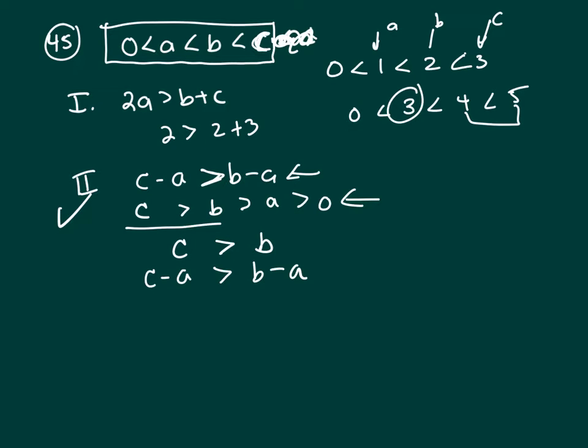And Roman numeral III says c over a is less than b over a. And that's not true because if you've got fractions that have the same denominator, we know that c is larger than b based on what's given here. So c over a has got to be greater than b over a.